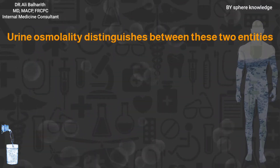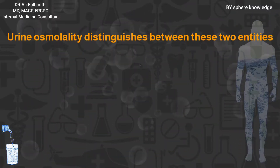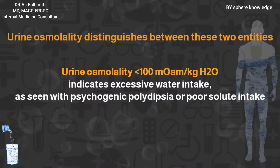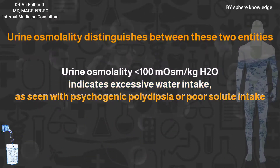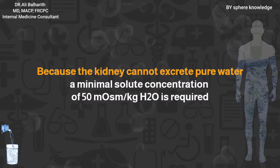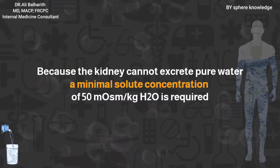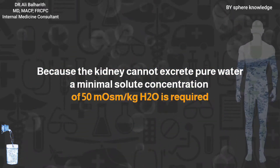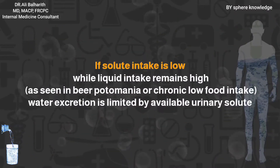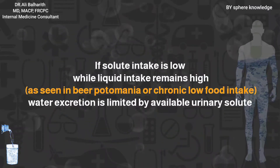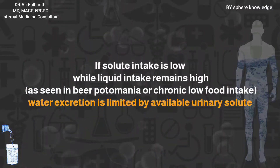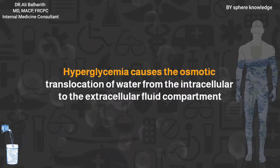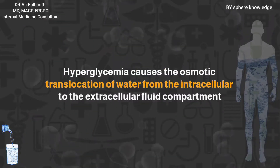Urine osmolarity distinguishes between these two entities. Urine osmolarity less than 100 indicates excessive water intake, as seen with psychogenic polydipsia or poor solute intake. Because the kidney cannot excrete pure water, a minimal solute concentration of 50 is required. If solute intake is low while liquid intake remains high, as seen in beer potomania or chronic low food intake, water excretion is limited by available urinary solute.